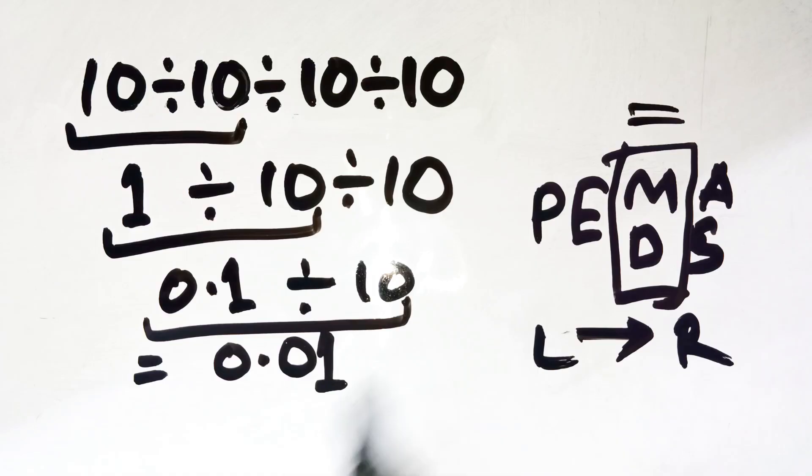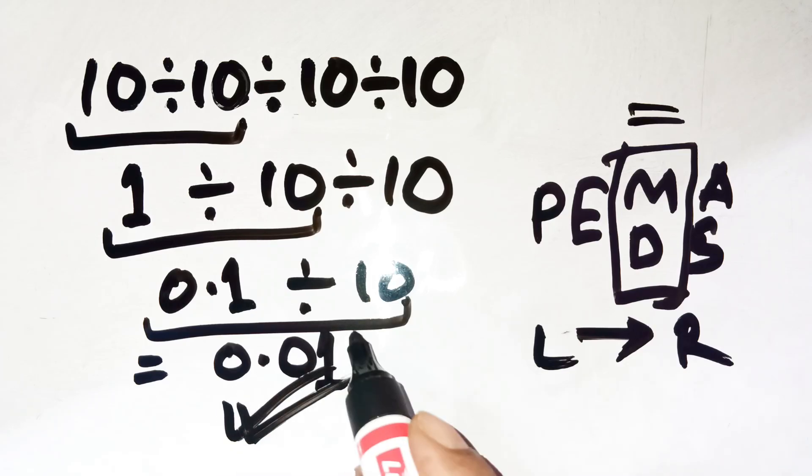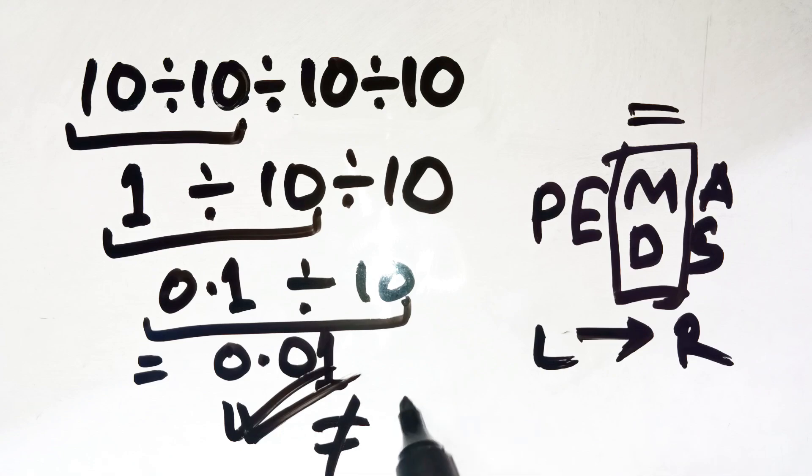No shortcuts, no pairing, no clever cancellations, just pure left to right division. So, said clearly and with emphasis, the correct answer is 0.01, not 1.